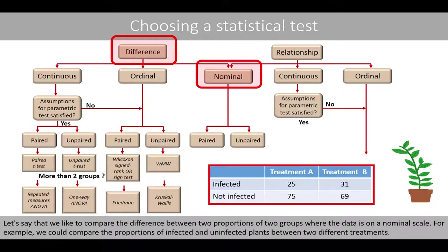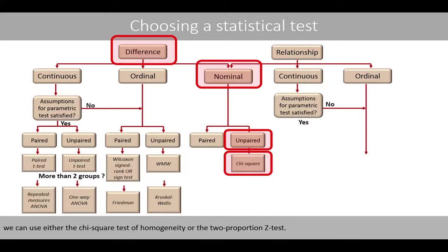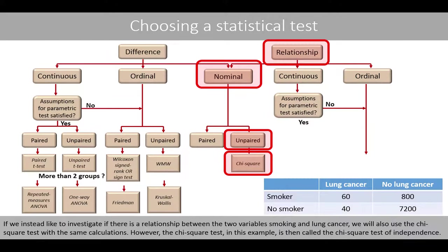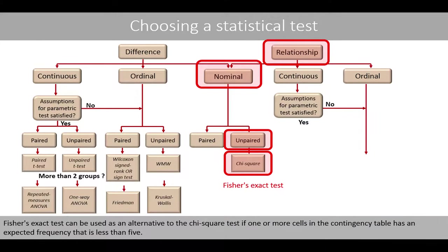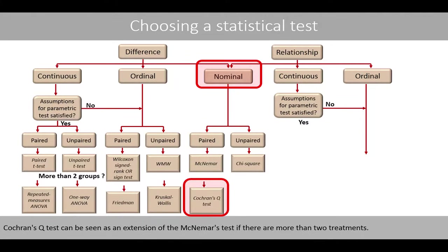If we'd like to compare the difference between two proportions where the data is on nominal scale — for example, comparing the proportions of infected and uninfected plants between two treatments — and the study design is unpaired, we can use either the chi-square test of homogeneity or the two-proportion z-test. If we'd like to investigate a relationship between two variables such as smoking and lung cancer, we also use the chi-square test, then called the chi-square test of independence. Fisher's test can be used as an alternative if one or more cells in a contingency table has an expected frequency less than 5. If we have a paired study design, we can use McNemar's test. Cochran's Q-test is an extension of McNemar's test for more than two treatments.